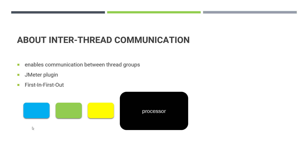You can download this inter-thread communication plugin from jmeterplugins.org or you can leverage the plugins manager. How it works: it implements a first-in, first-out mechanism. Assume you are in a queue to get a ticket — whoever goes first will be able to get the ticket. The same analogy applies in JMeter thread group communication.